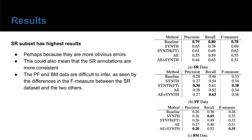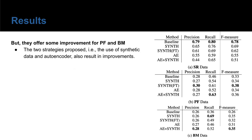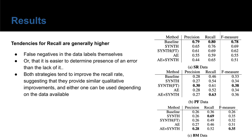In general, as you can see, the results can improve a lot. Some highlights are that the sight-reading subset has the highest results, and that the pre-training strategies do not improve the results for the sight-reading set at all. But for the performance set and Burgmüller, they do. Finally, the tendencies for recall are generally higher, which could be due to false negatives in the data, or that it's simply easier to determine the presence of an error rather than the lack of it.